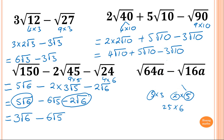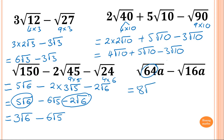Last question: square root of 64i minus square root of 16i. Same thing applies — square root of 64 is 8, so that's 8 root i. Square root of 16 is 4, so that's 4 root i. Then 8 minus 4 is 4, so the answer is 4 root i. This is how you add or subtract surds — thank you so much for watching.